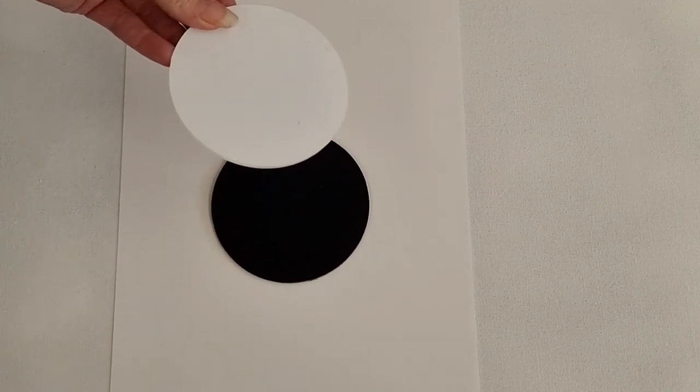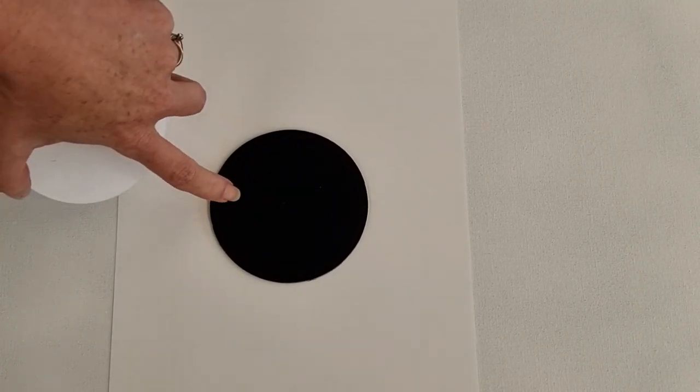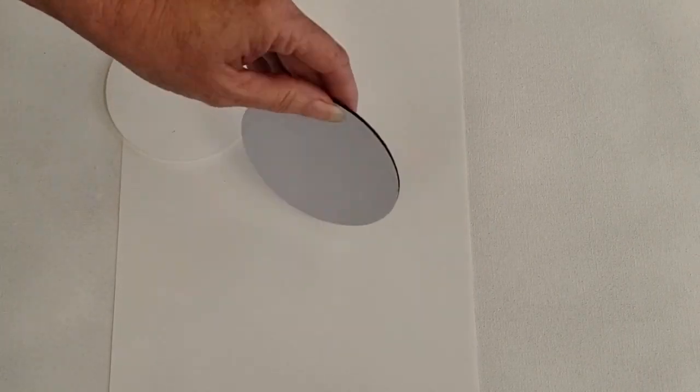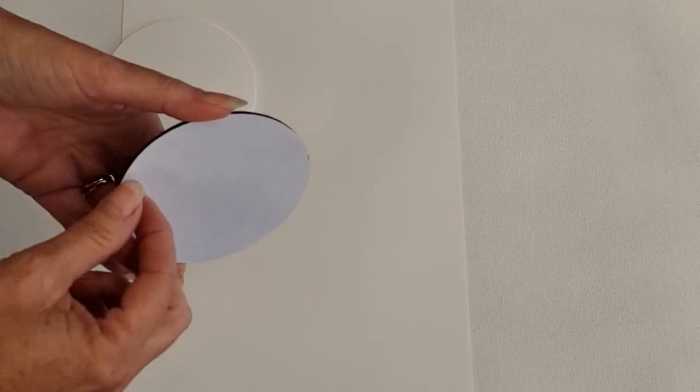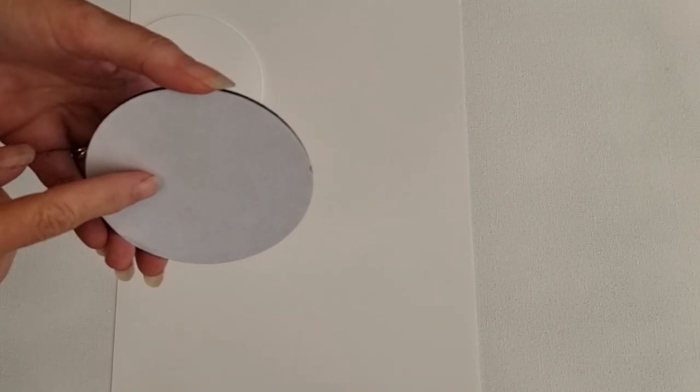So what it consists of is four clear acrylic discs and four of our felt backings. This is the felt backing here and as you can see it's self-adhesive, so that's got that coating there and when you peel that off it's sticky.